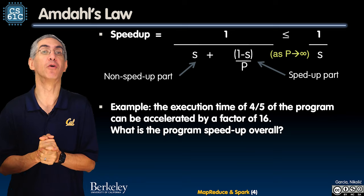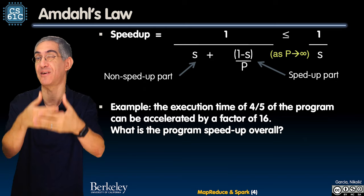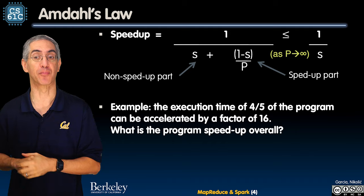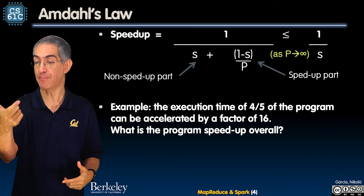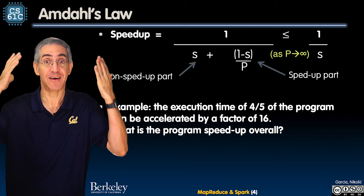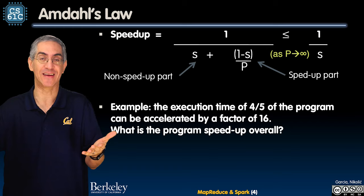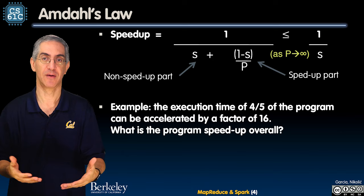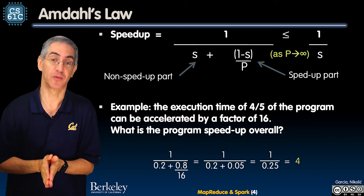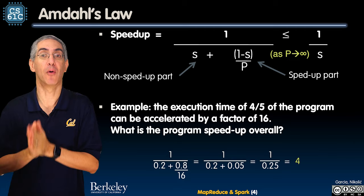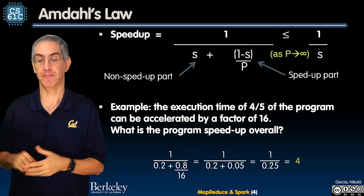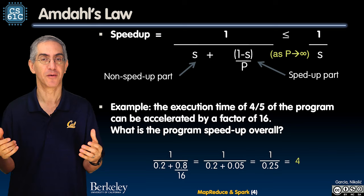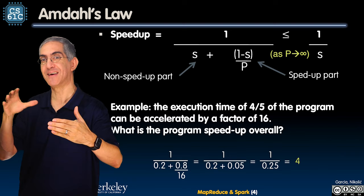For example, the execution time of four-fifths of a program can be accelerated by a factor of 16. So 80% of the code, which is parallelizable, can be accelerated by a factor of 16. What's the overall speedup? Well, the serial fraction S is 20%, or 0.2, and the parallel fraction is 0.8. That 0.8 is going to be 16 times faster, so that's now 0.05. So 0.2 plus 0.05 is 0.25, and 1 over 0.25 is 4. You put all this money into a 16-times improvement, but at the end of the day you only had a 4-times improvement.